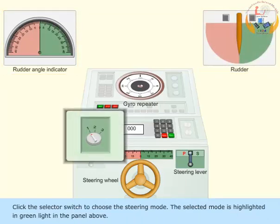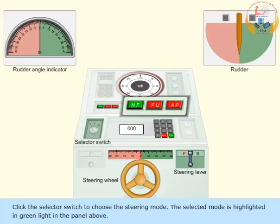Click the selector switch to choose the steering mode. The selected mode is highlighted in green light in the panel above.